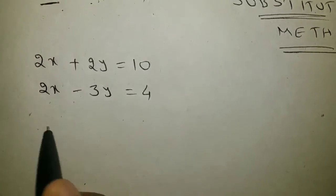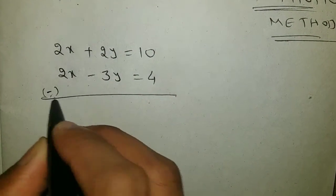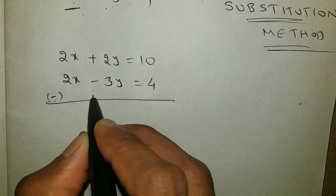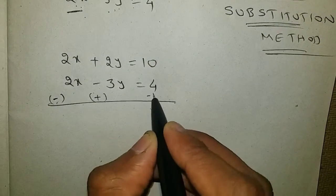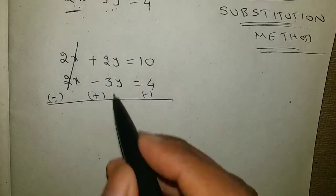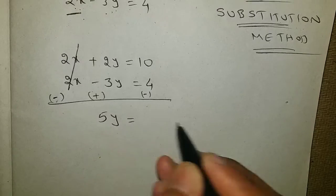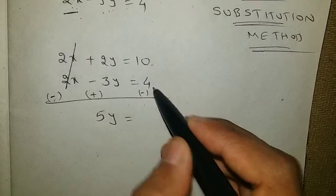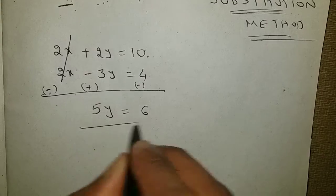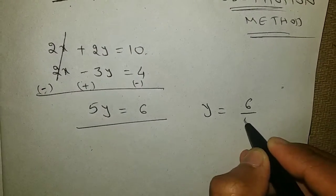Now we need to solve these two equations. I am doing subtraction of the equations. Here it is plus, so this will become minus; this is already minus, so that will become plus; this is plus, it will become minus. So 2x minus 2x cancel. Plus 2y plus 3y gives plus 5y, equals to 10 minus 4, which is 6. So 5y is equal to 6, and y value is 6 by 5.